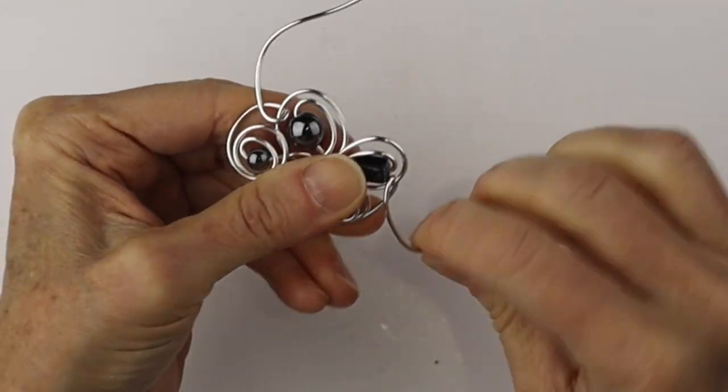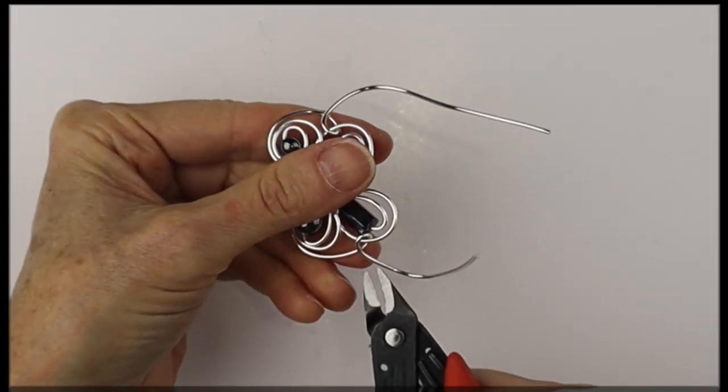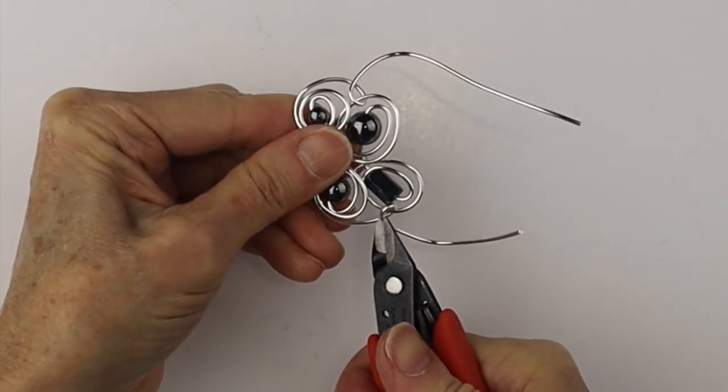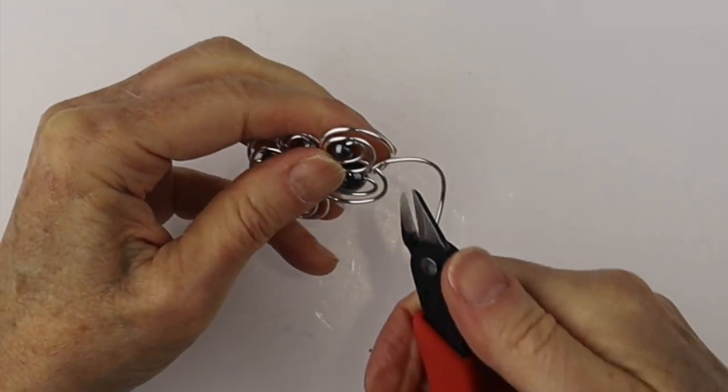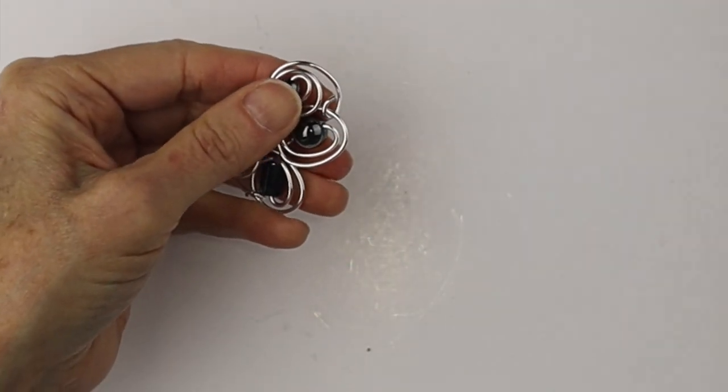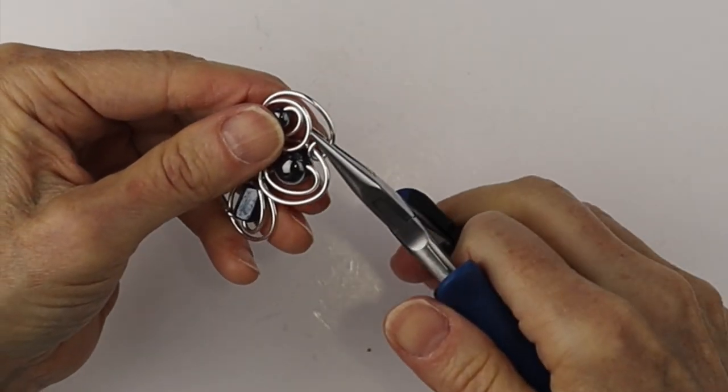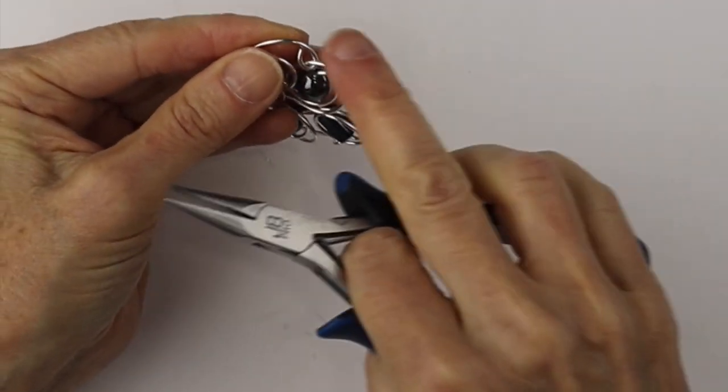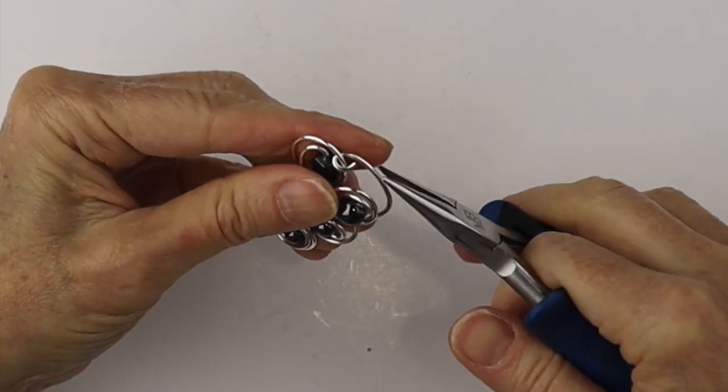We're going to bring it around and then we're going to clip the ends flush on both sides. So we'll just clip it flush and then we'll get our flat pliers just to pinch in that pokey end and do any little adjustments you need. Just want to make sure the ends aren't scratchy.